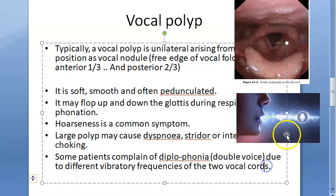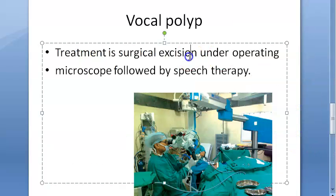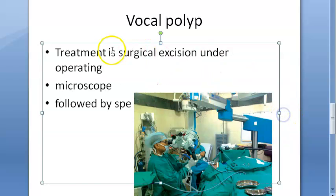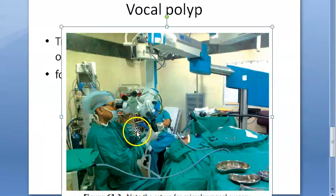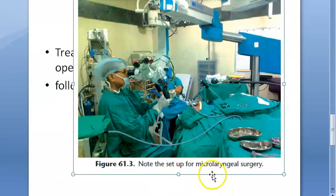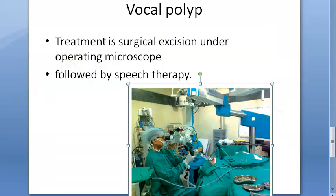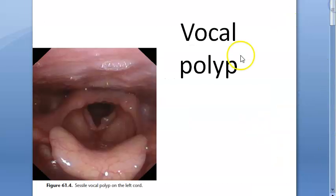The treatment is to surgically remove the polyp — excise it under a microscope — and then give speech therapy. The surgery used is micro laryngeal surgery. Unlike vocal nodules, the primary treatment here is surgical excision, followed by voice training.